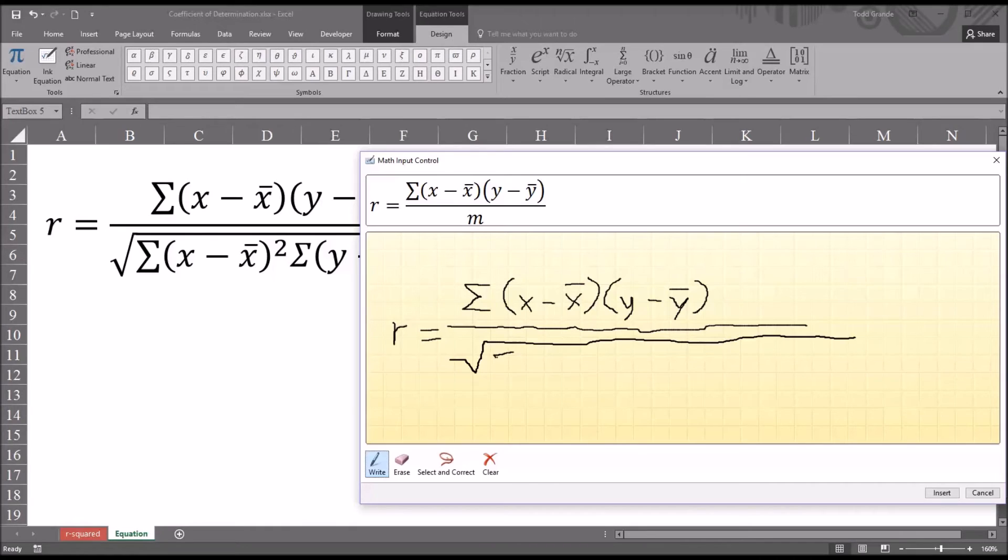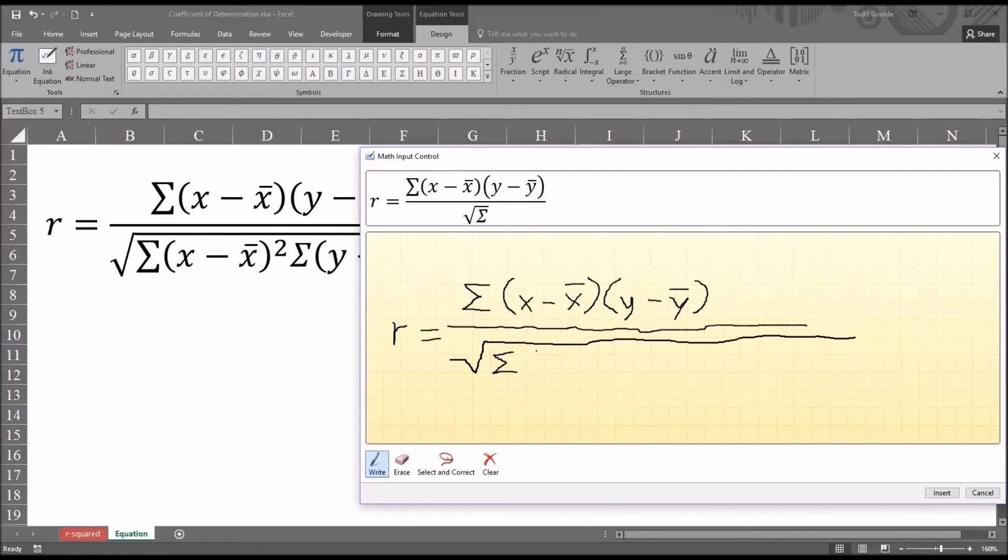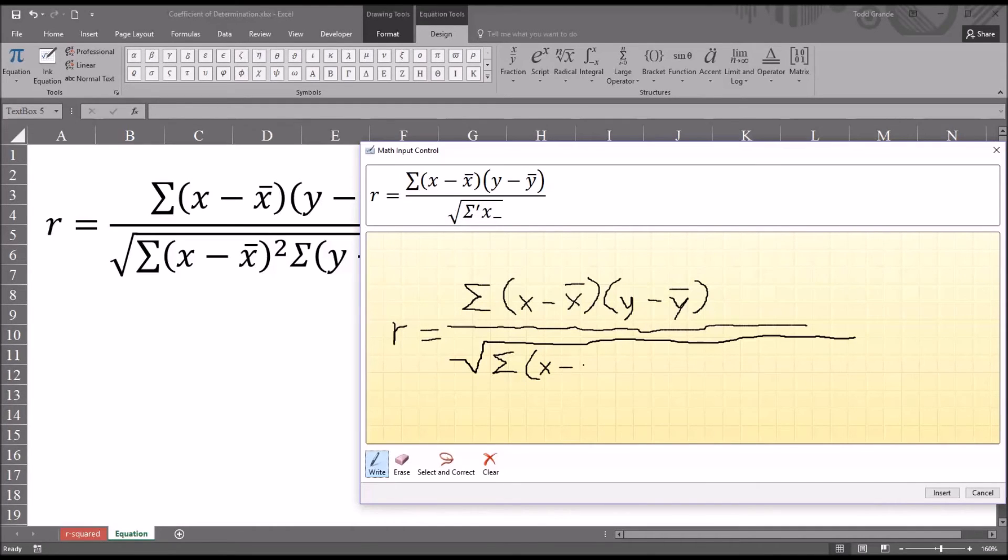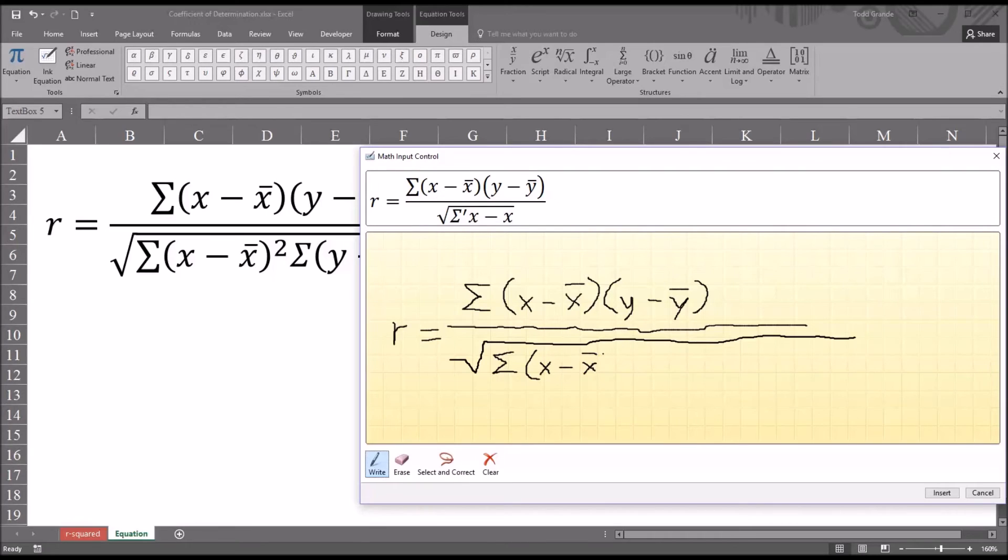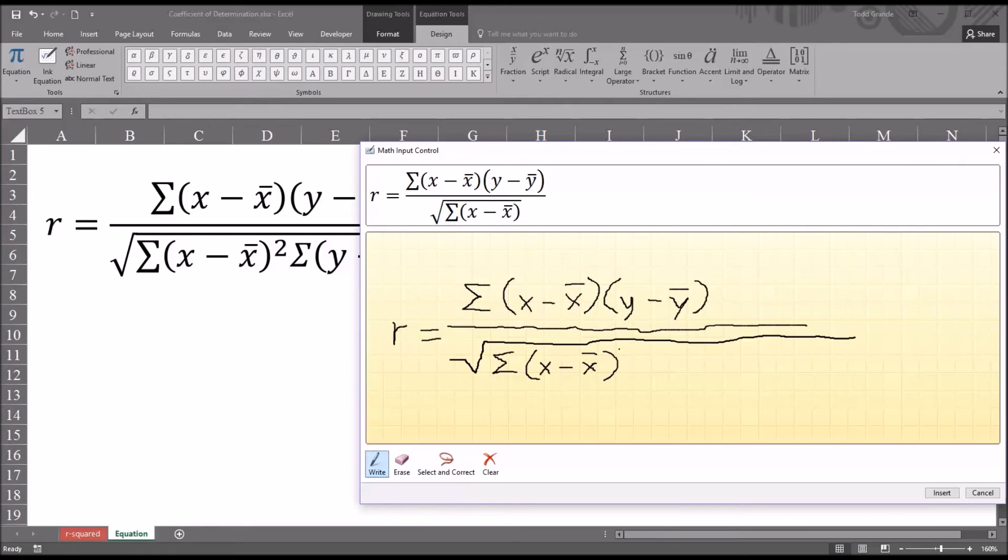And then it's going to be sigma. And again X minus X bar. It did pick that up correctly. And then this is all squared. So I'm going to put a 2 here. And then it will start again with sigma. And these symbols that I'm drawing, I mean with my handwriting, it leaves a lot to be desired for these equations.